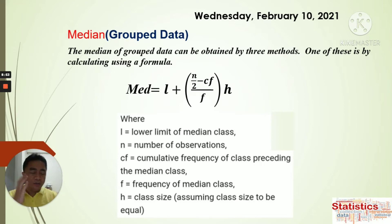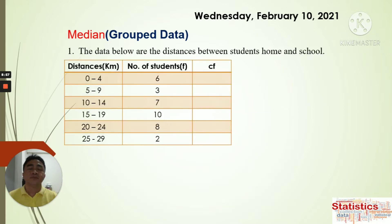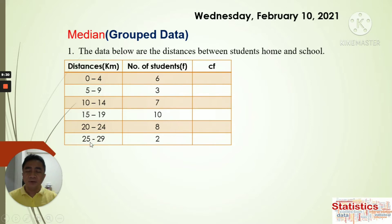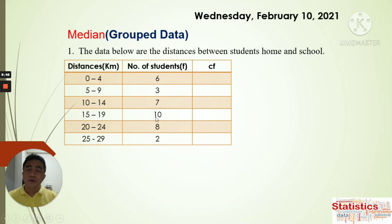Example 1: The data below shows the distances between students' homes and school, in kilometers. We have the class intervals 0–4, 5–9, 10–14, 15–19, 20–24, and 25–29, giving a class size of 5. The frequency column shows the number of students per class, and we need to compute the cumulative frequency.